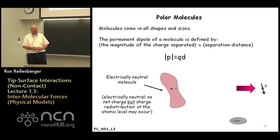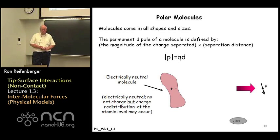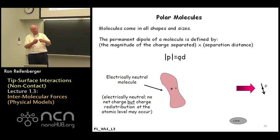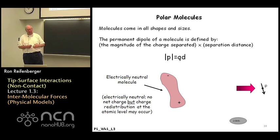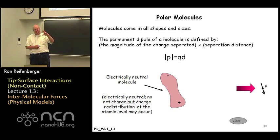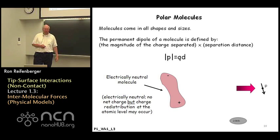The next situation to worry about is how an ion interacts with molecules, and we have two cases to consider: one is a polar molecule, the other is a non-polar molecule. A polar molecule is a molecule in which for whatever reason the electronic charges inside the molecule separate. For instance, the negative charge might be slightly localized on one end of the molecule, which would make the other end positively charged. We would then say that this molecule acquires a dipole moment p, which is numerically equal to the charge that's separated times the distance d over which those charges separate.